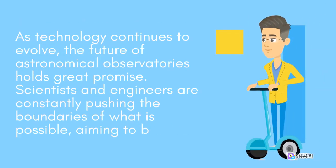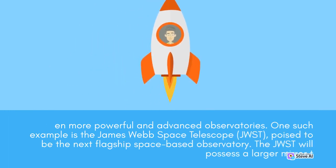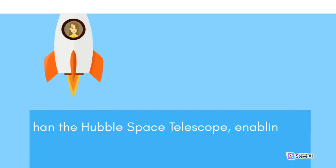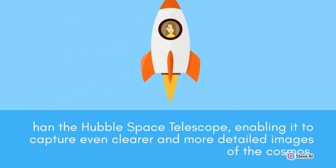As technology continues to evolve, the future of astronomical observatories holds great promise. Scientists and engineers are constantly pushing the boundaries of what is possible, aiming to build even more powerful and advanced observatories. One such example is the James Webb Space Telescope (JWST), poised to be the next flagship space-based observatory. The JWST will possess a larger mirror than the Hubble Space Telescope, enabling it to capture even clearer and more detailed images of the cosmos.